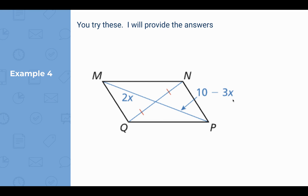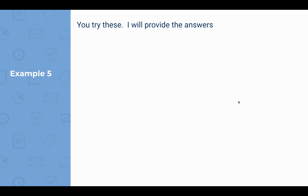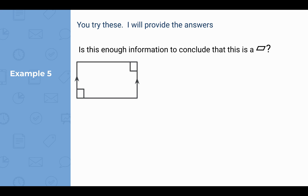Here's another one — go ahead and pause the video and try this. For this to be a parallelogram, x would have to equal 2 because the diagonals would have to bisect each other. So 2x would have to equal 10 minus 3x, giving x equals 2.